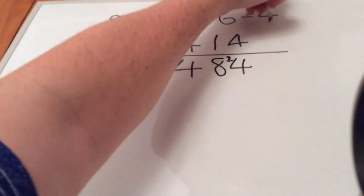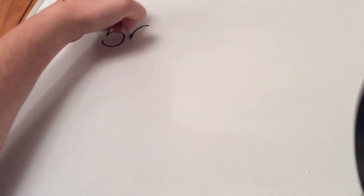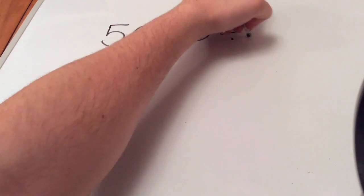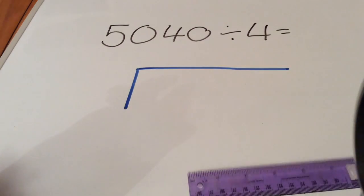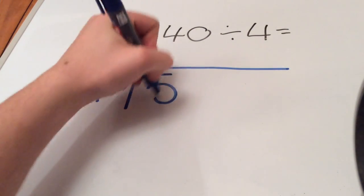Final example is 5040 divided by 4. Remember, the number we are dividing by goes on the outside of the bus stop and the other numbers inside.